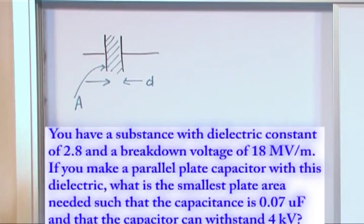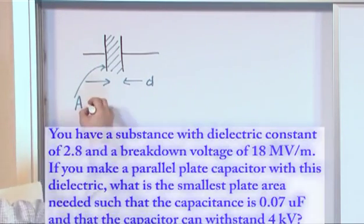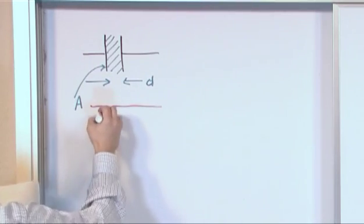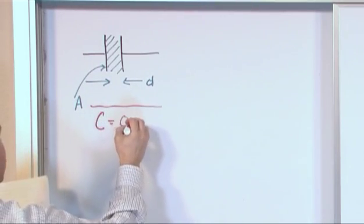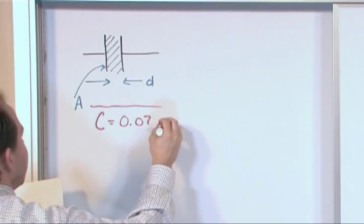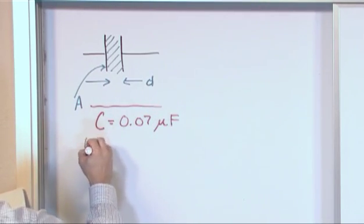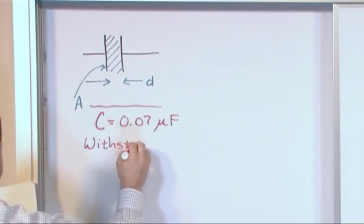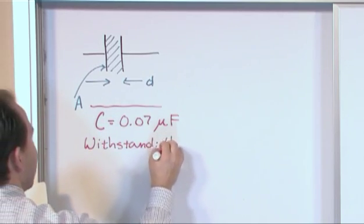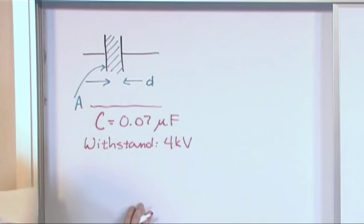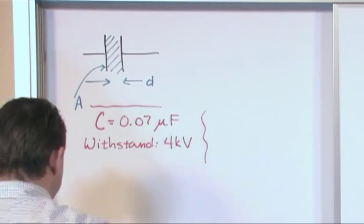So what we want to have, we'll draw a little line here to separate it. What we want is a capacitor of 0.07 microfarads. That's what we want in the end. We want it to withstand 4,000 volts, 4 kilovolts. Alright? And I'm going to switch colors. This is all relevant information, but I'll just switch colors to make it easier.